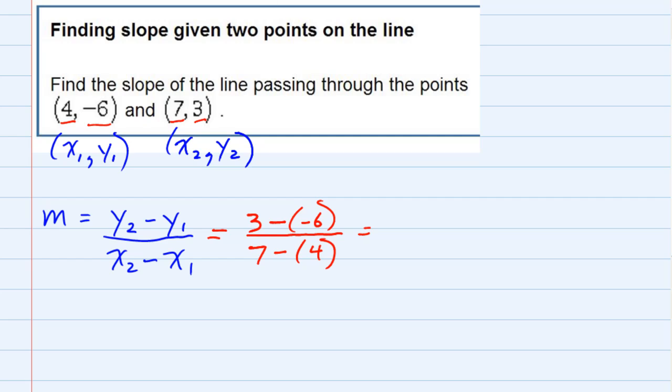Simplifying the top, that would be 3 plus 6, and simplifying the bottom, that would be 7 minus 4. So the 3 plus 6 is 9, the 7 minus 4 is 3. So in this case, the fraction simplifies to 9 divided by 3, which is 3. So the slope of our line is 3.